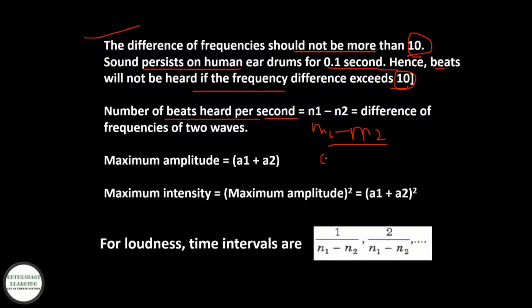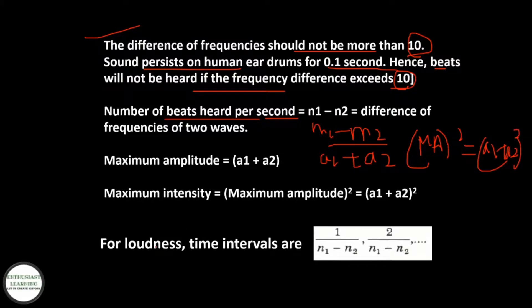Maximum amplitude = A1 + A2, and maximum intensity = (A1 + A2)². For loudness, the time intervals are 1/(N1 − N2) and 2/(N1 − N2).